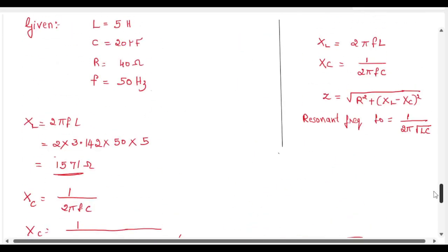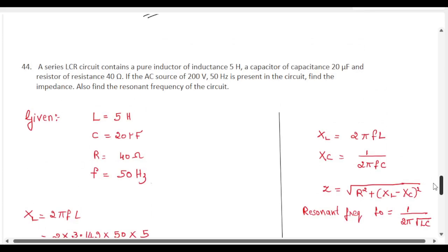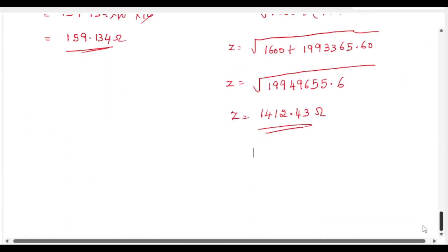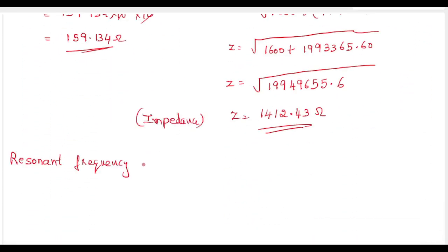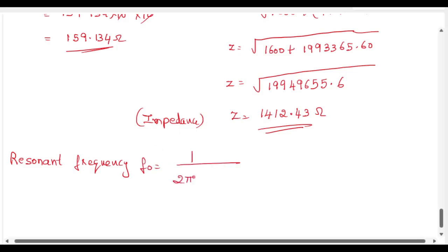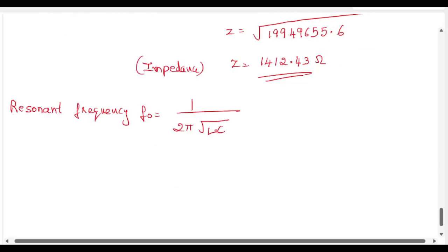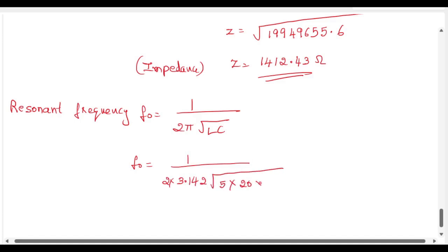There is one more question: also find the resonant frequency of the circuit. Resonant frequency f-naught is given by 1 by 2 pi root of LC. Substituting the values for L and C, we get f-naught equal to 1 by 2 into pi value 3.142 into root of L value 5 into capacitance value 20 microfarad, that is 20 into 10 to the power of minus 6.